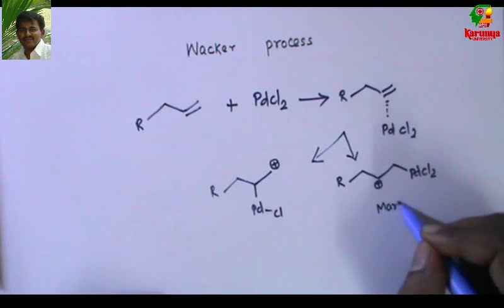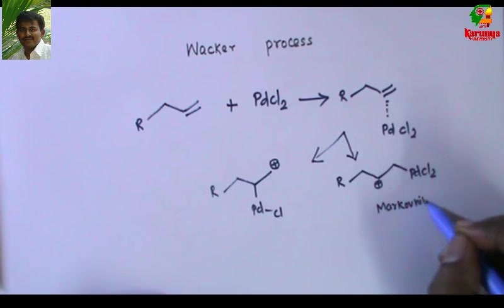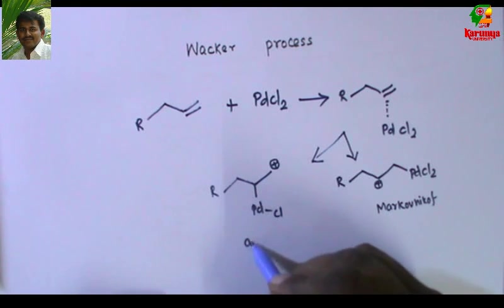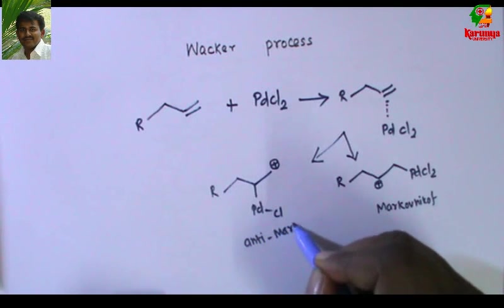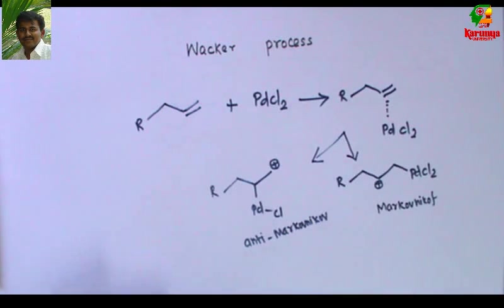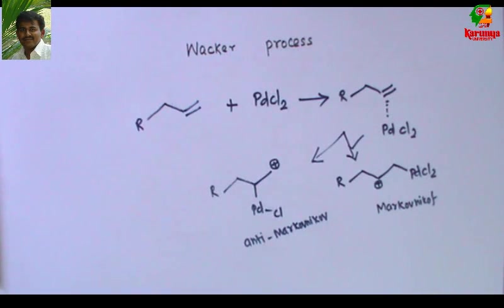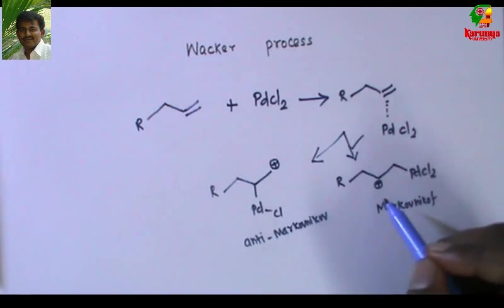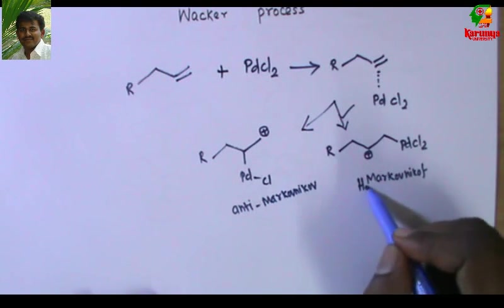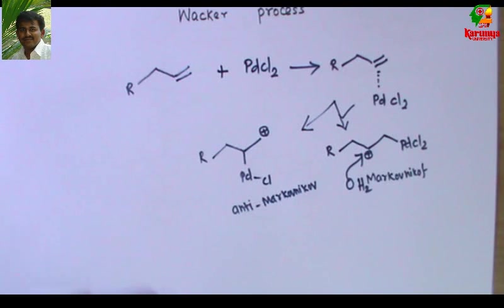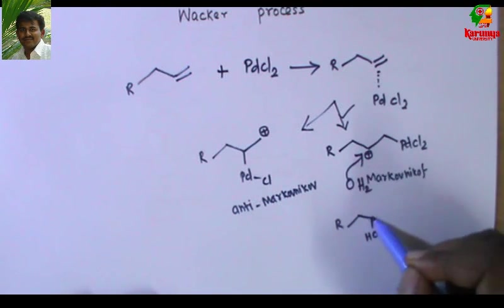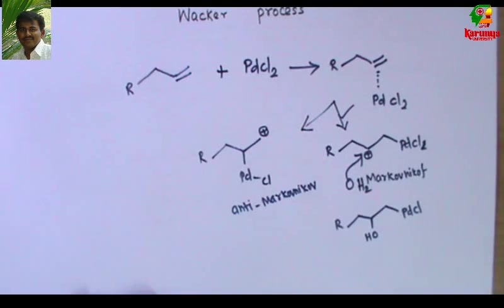This is called the Markovnikov addition product. The Wacker process prefers Markovnikov addition, that is, formation of the more stable carbocation. The less stable carbocation pathway is less preferred. The more preferred carbocation is then attacked by a water molecule to give the product.